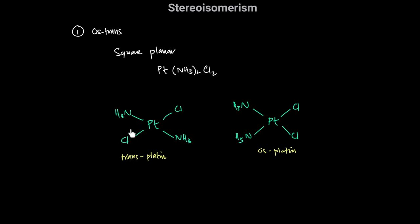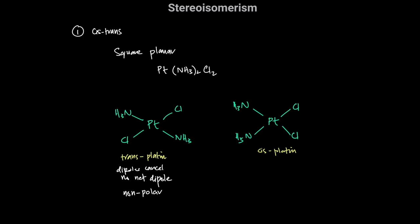In the trans isomer, the identical groups are 180 degrees from each other, and in the cis isomer they're 90 degrees from each other. We should also be able to determine whether the isomer has a dipole or not. In the trans isomer there is no net dipole because the two chlorines cancel each other out and the two ammonias also cancel each other out — it's a non-polar complex.